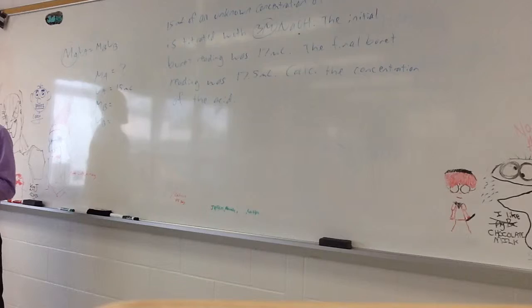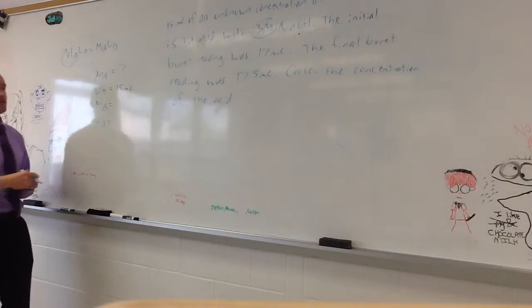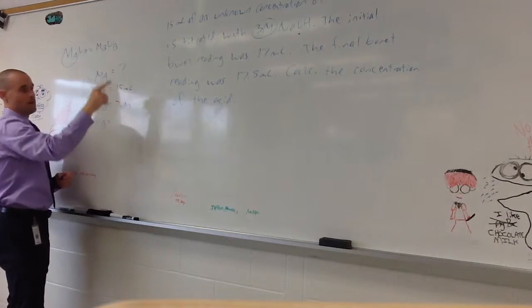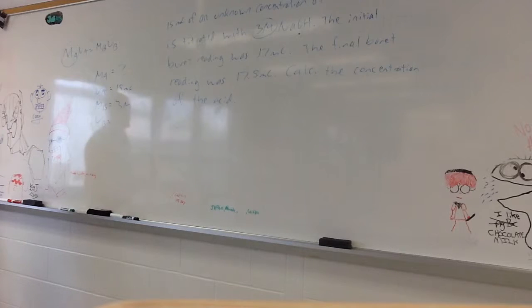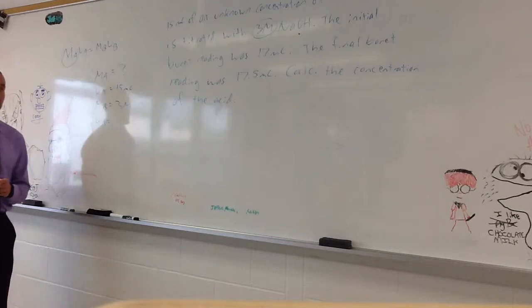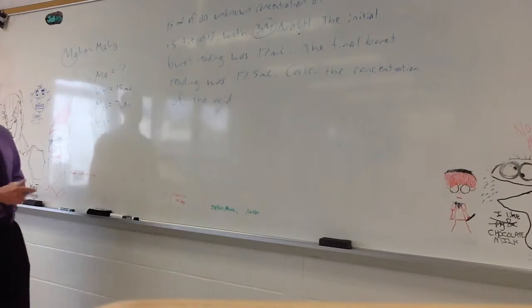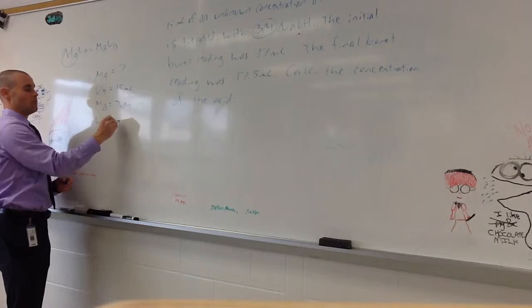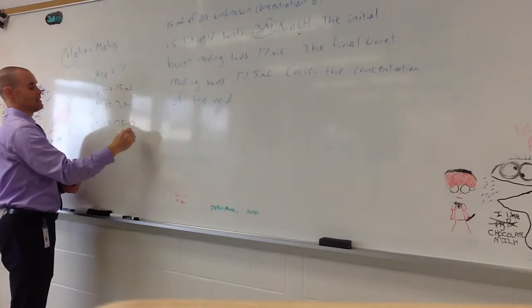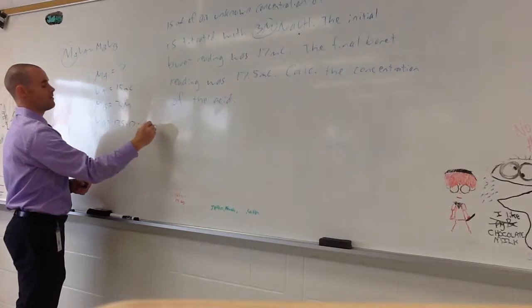The molarity of the base. Caitlin, you with me? Yeah. The molarity of the base is 3. I already circled that. 3 molar NaOH. You need to know NaOH as a base. It says the initial burette reading was 17. Final burette was 17 and a half. So, the volume of the base would be 17.5 minus 17 equals 0.5 milliliters.